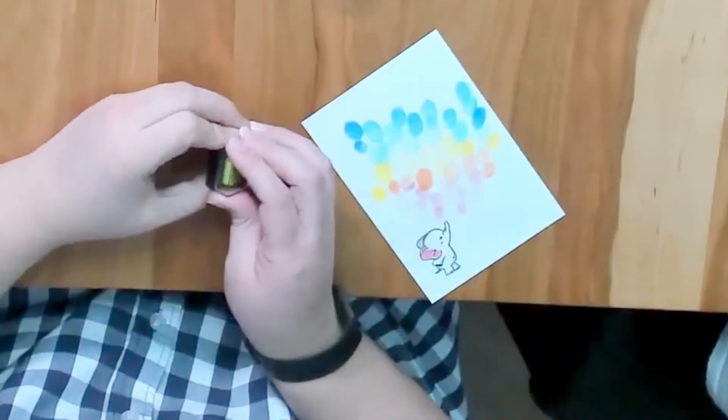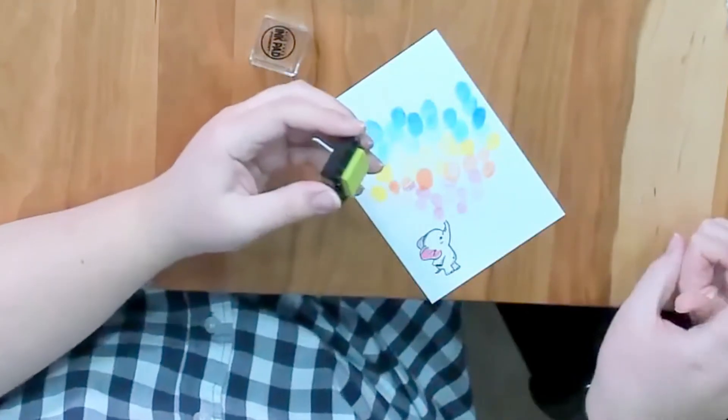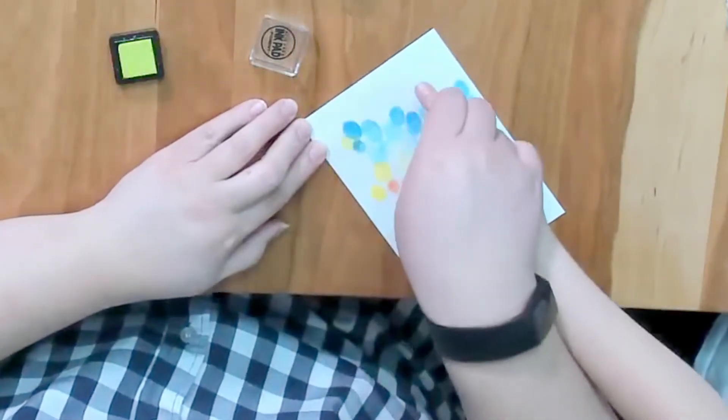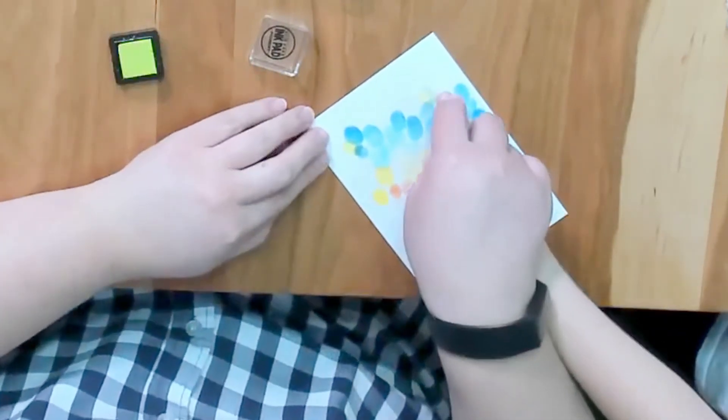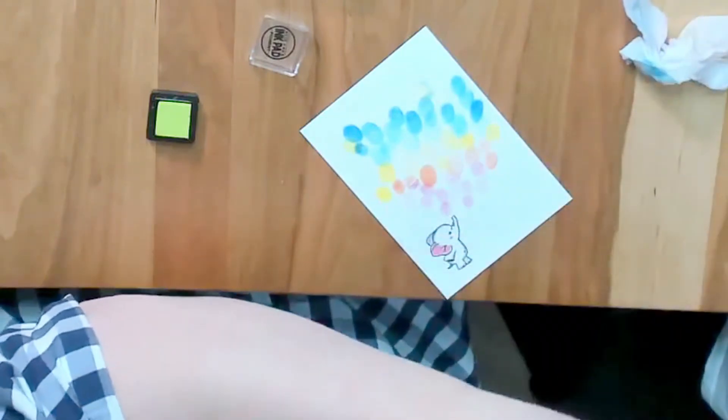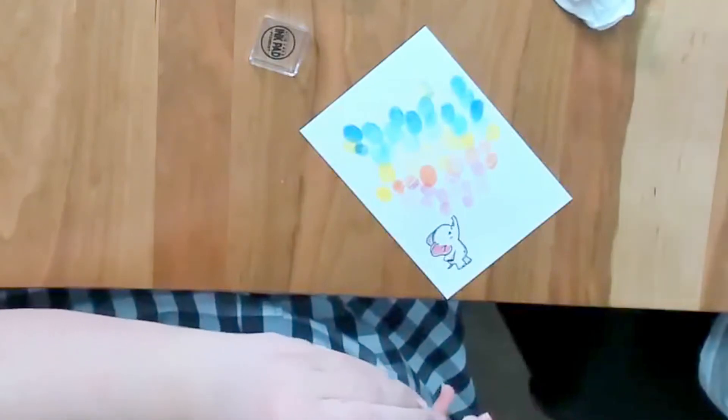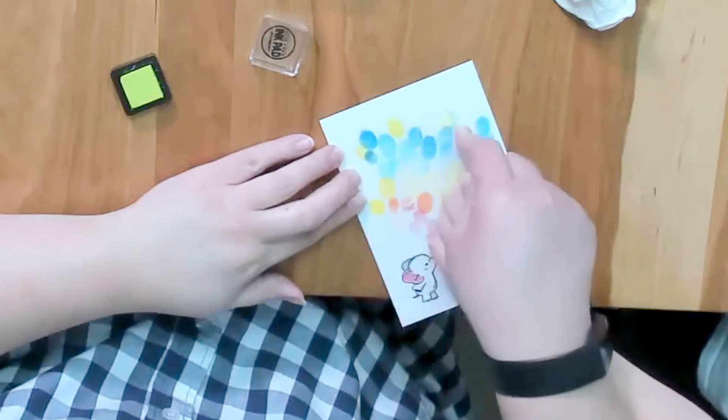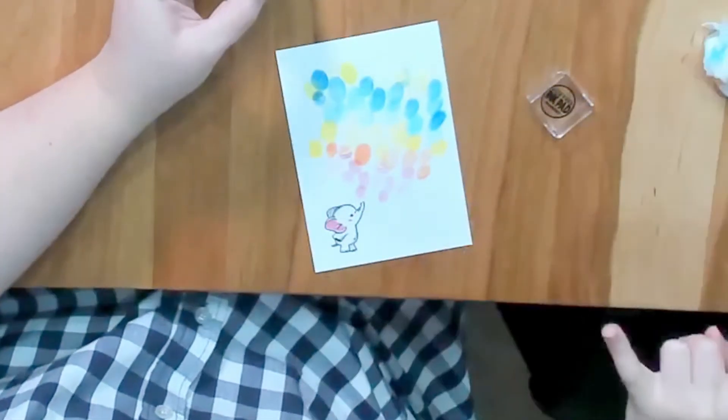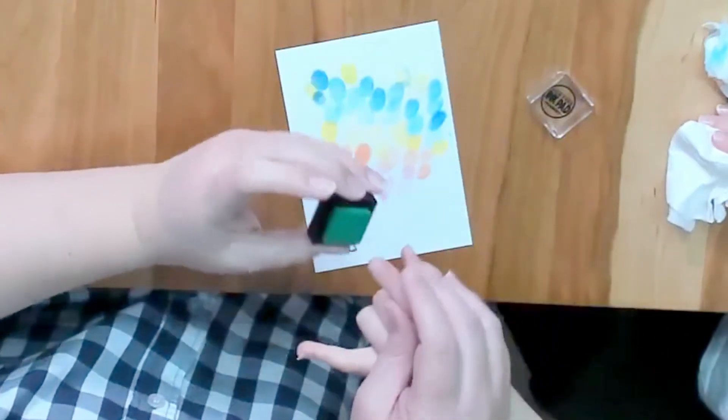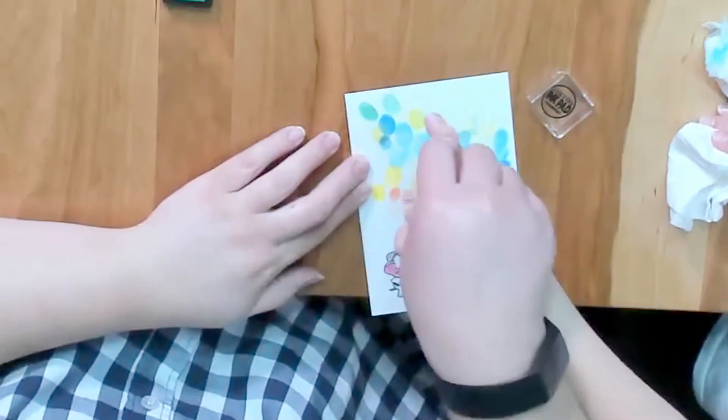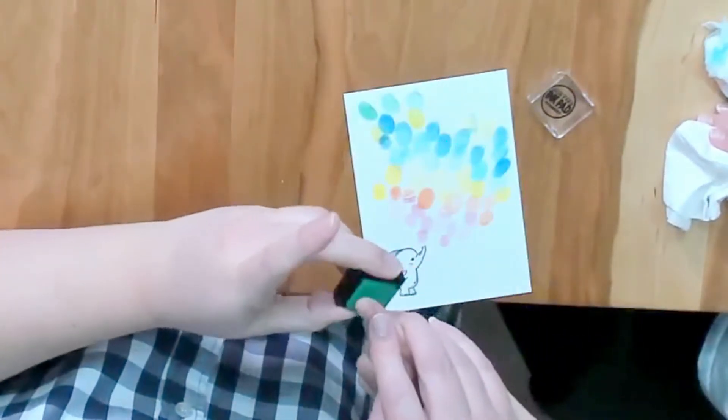You can do the same thing with the green because your green is going to be significantly darker. You can do a lighter green first. What we're going to be doing here is going, and see that's okay, see how it kind of smeared? That's fine because you're going to have blurred lines anyway as your bubbles go up. Make sure you clean them off in between. We're just going to do a little bit of this green because it has more of a yellow in it. Then we're going to go with our dark green. We're almost at the top.